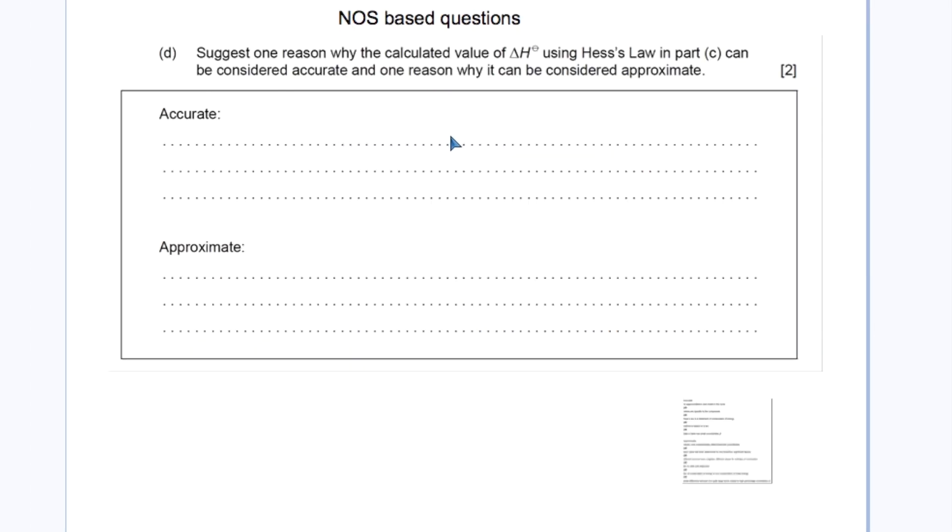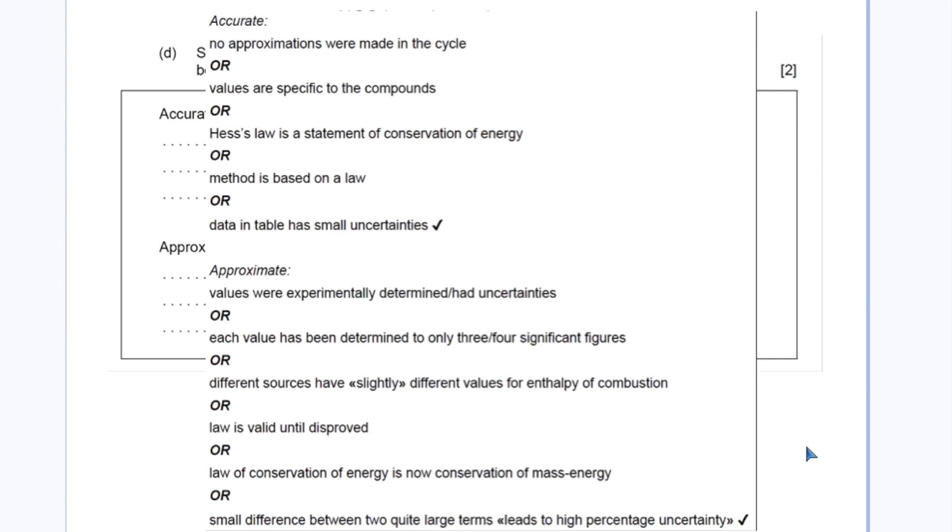A third often-neglected area is nature of science questions. My advice is: if you see a question in the exam and you're familiar with the chemistry guide but wondering where this question comes from, it's most likely based on NOS. This two-mark question proved difficult last November, where examiners asked students to give one reason why the calculated value of ΔH using Hess's law could be considered accurate, and another reason why it could be considered approximate. Like most nature of science questions, there were a range of possible answers, but unfortunately most students were stumped.